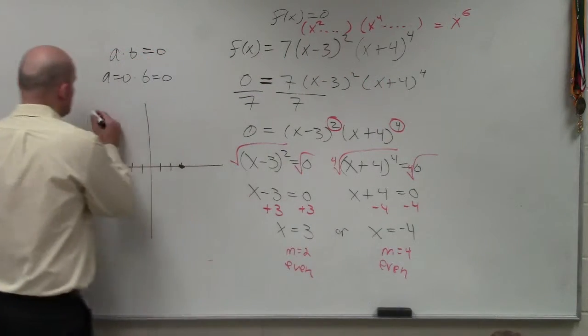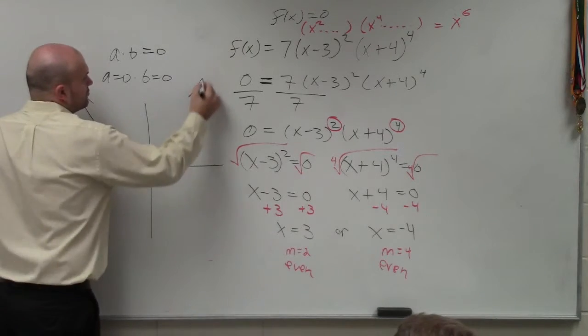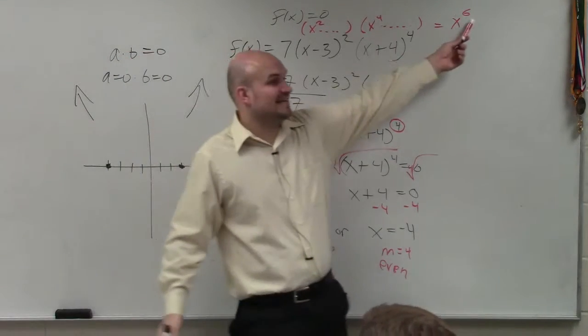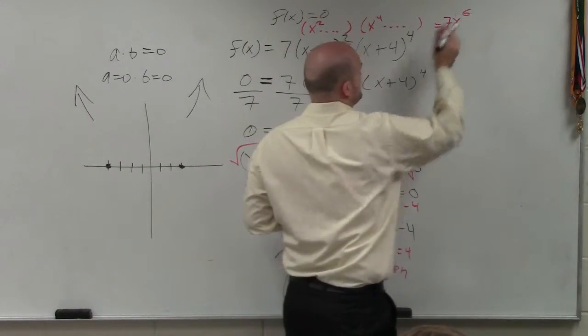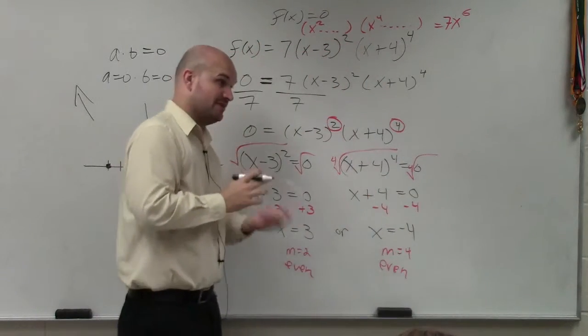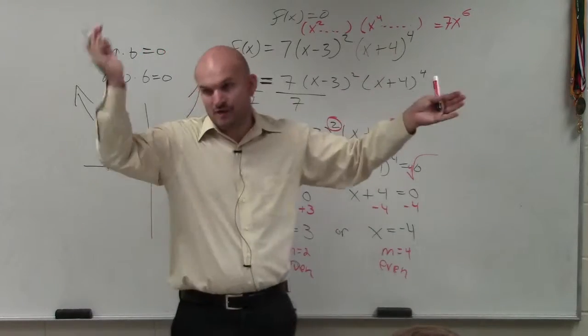So I know the graph has to rise left, rise right. Because it has an even degree, and it would have a positive leading coefficient. Positive leading coefficient, even degree, rise left, rise right. The informal way.